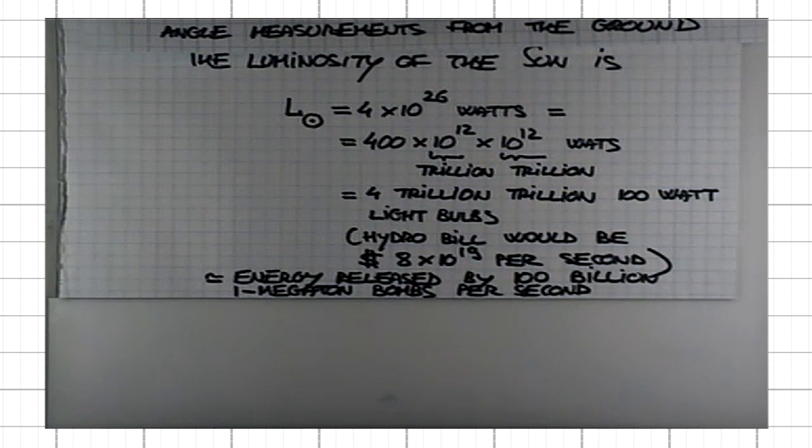Keep in mind that the Sun is just sort of an average garden variety star. There are stars that are much more luminous than the Sun is, and of course, there are many that are much dimmer than the Sun.